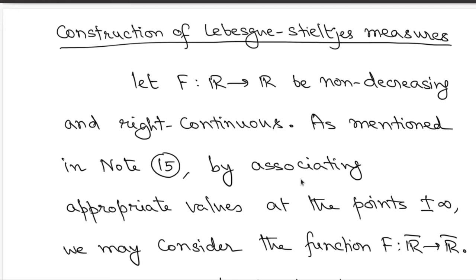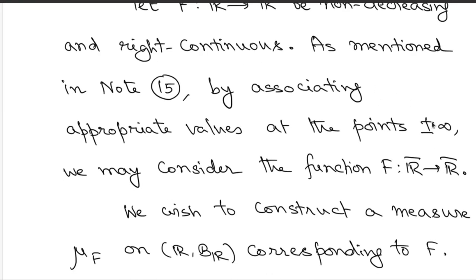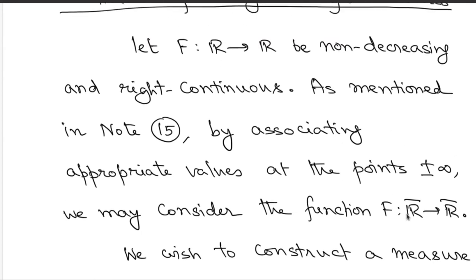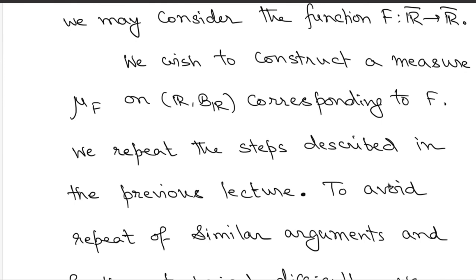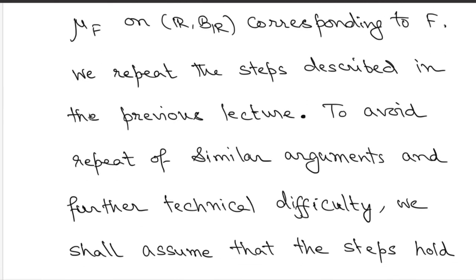Now we start with a non-decreasing, right-continuous function defined on the real line taking real values. This function has limits at ±∞, and we assign f(+∞) and f(−∞) as those limit values. Thus f can be considered as a function from the extended real line to the extended real line. We wish to construct a measure, denoted μ_f, following the same steps as for probability measures.